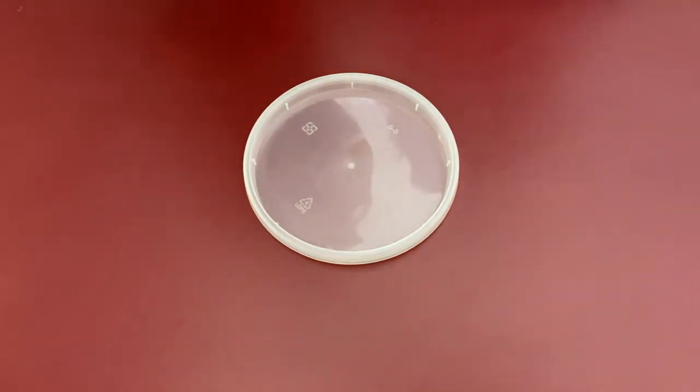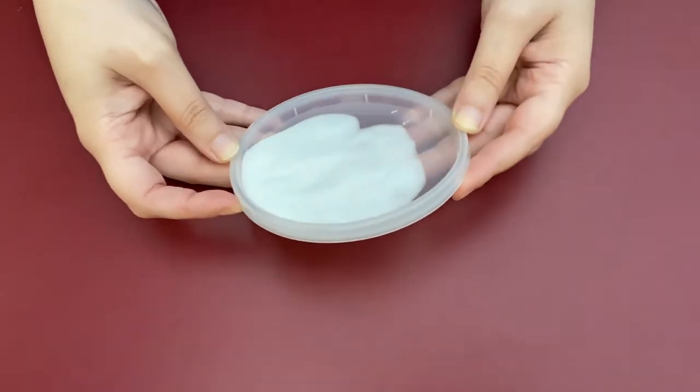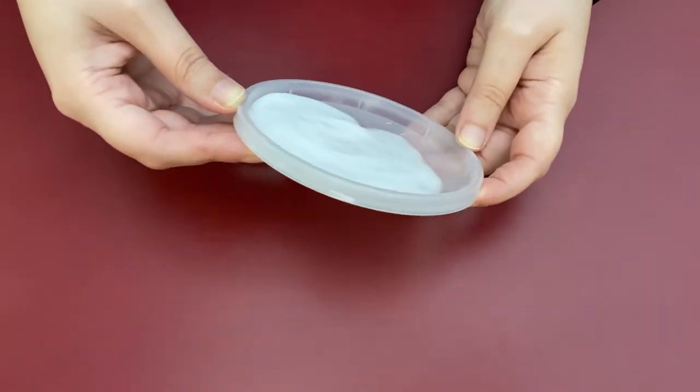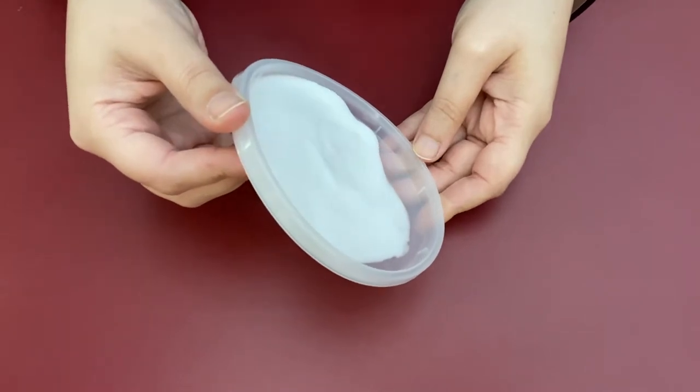First, pour some glue onto a lid. You only need enough glue to cover the lid until you can't see the plastic underneath. Make sure you spread the glue on the lid until it's as even as possible.